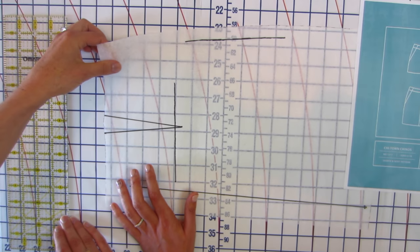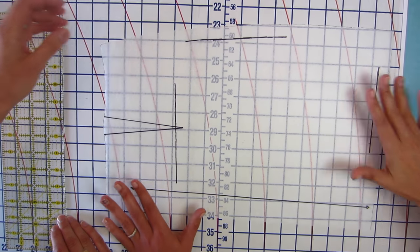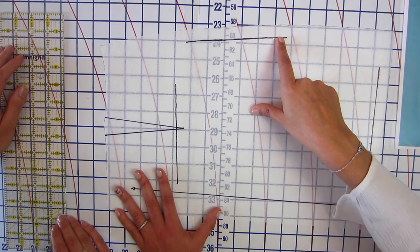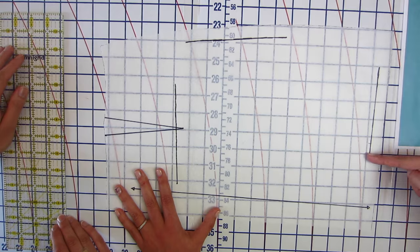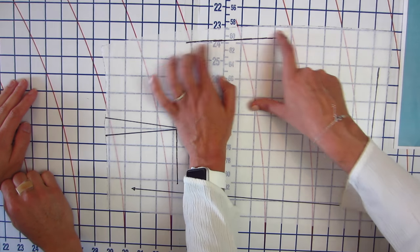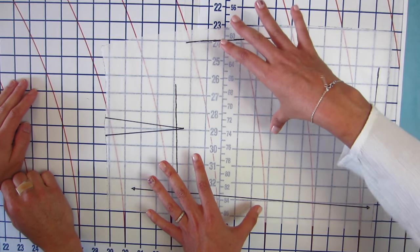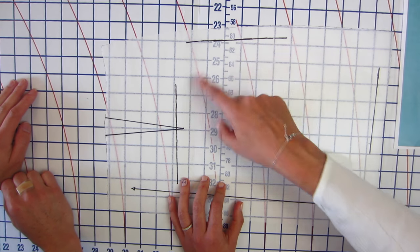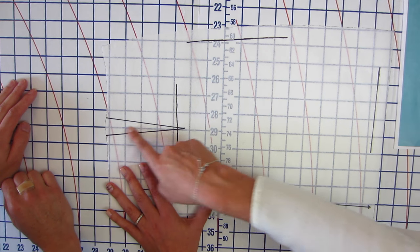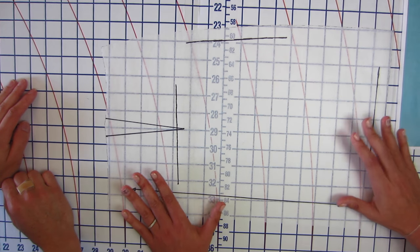And then this on the bottom is Abby's size four that we have traced. We marked the grain line. We marked the pocket placement and we marked the dart. So all of that is already marked. And then we marked the seam allowances on the side seam and on the hem. And we really only marked them for a couple of inches because the way you do the adjustment is you really only need to know the seam allowances through the widest part of the skirt and then through the dart here.